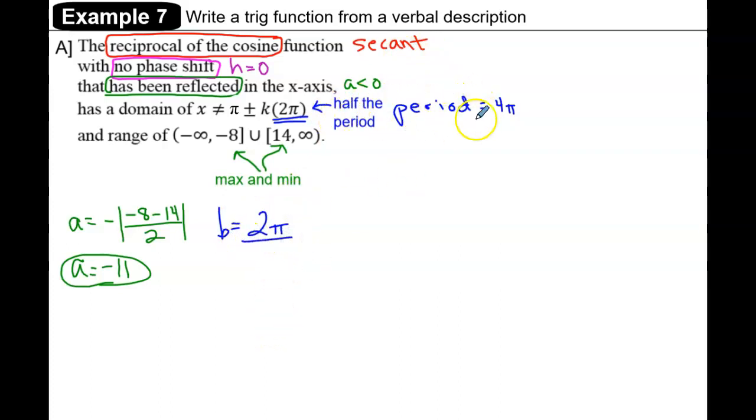divided by the period of this new function, which is 4π. The π's cancel and leave us with b = 1/2.